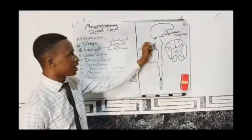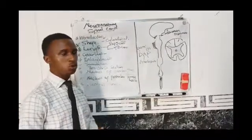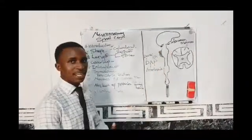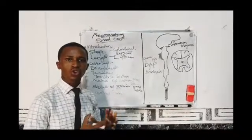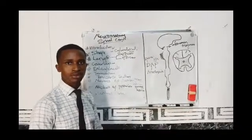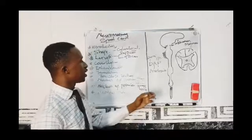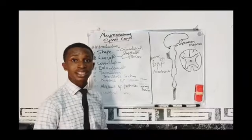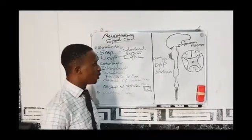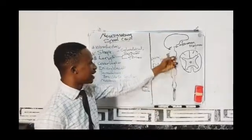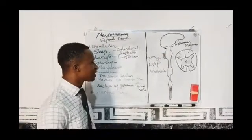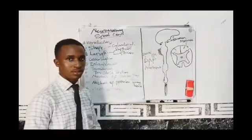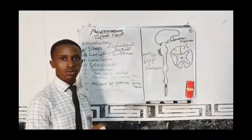Nerves arise from the spinal cord to supply various parts of the body. The nerves arising from the cervical enlargement form the brachial plexus, which supplies the muscles of the upper limb. The nerves arising from the lumbar enlargement form the lumbar plexus, which supplies the muscles of the lower limb. These enlargements are essential for providing nerve supply to the muscles of the upper and lower limbs.